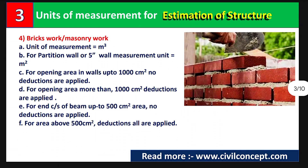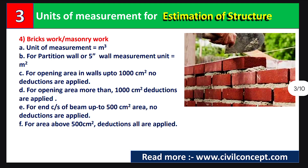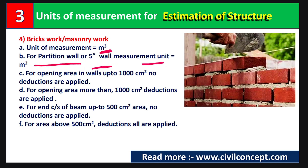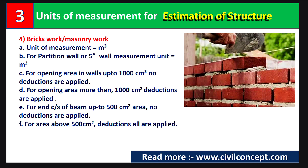The fourth topic is brick work or masonry work. The unit of measurement is cubic meters. However, for a partition wall or a 5-inch wall, the measurement unit is square meters. For a 10-inch wall or thicker, the unit is cubic meters. For openings in the wall up to 1000 cm², no deductions are applied.